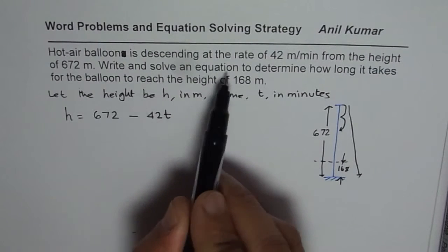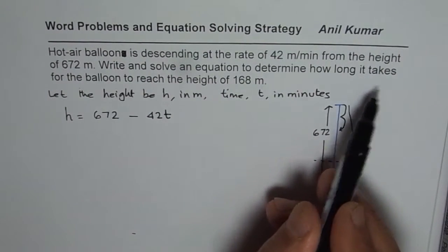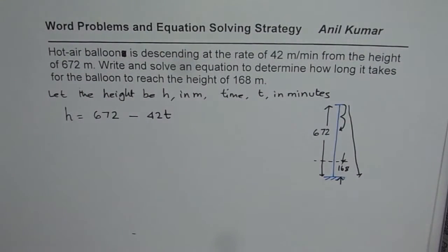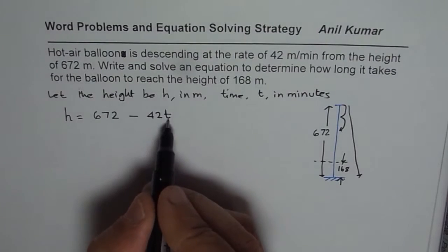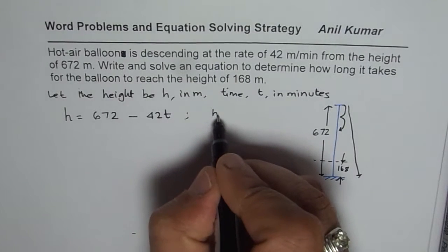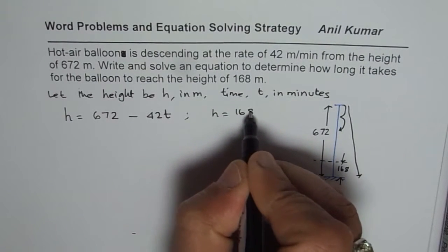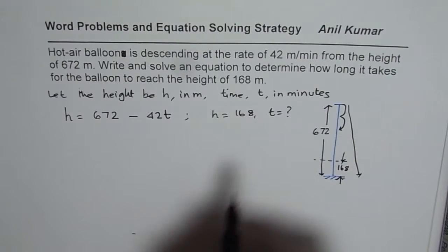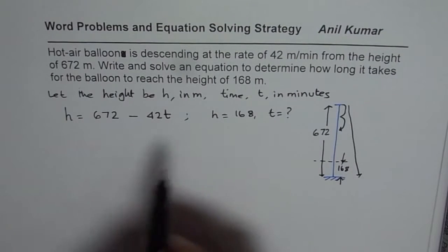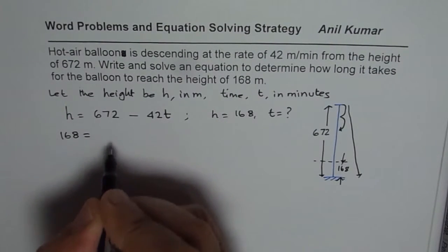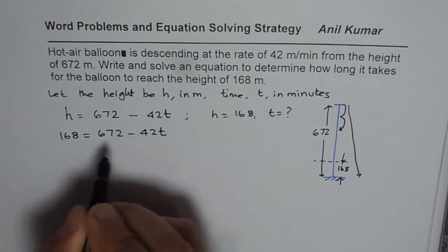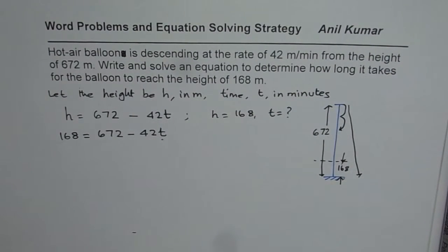Now we need to solve the equation to determine how long it takes for the balloon to reach the height of 168 meters. That means we need to find T when H is 168. So we substitute 168 for H and get: 168 = 672 − 42T. We now have to find the value of T, the time.